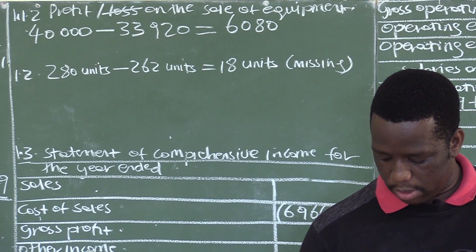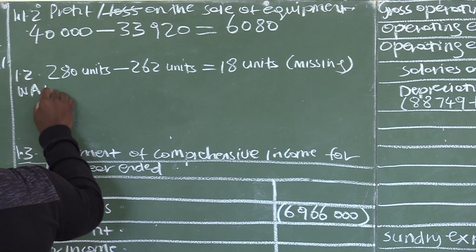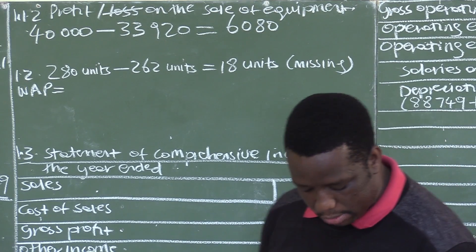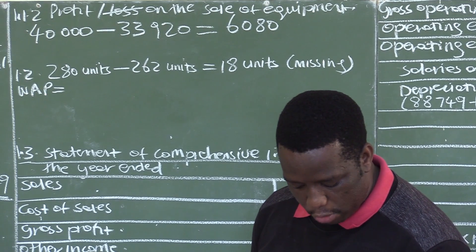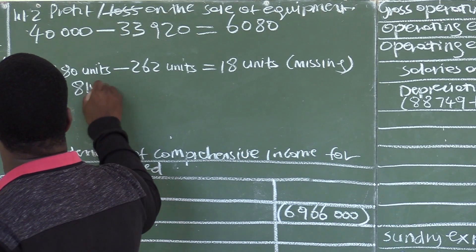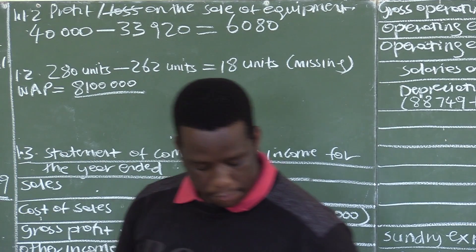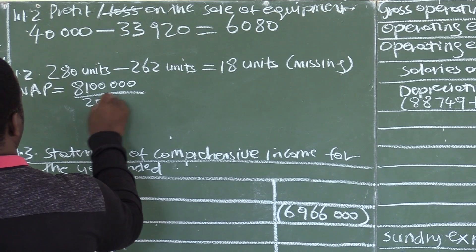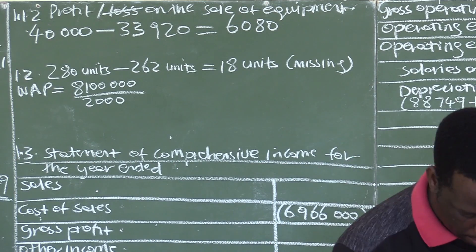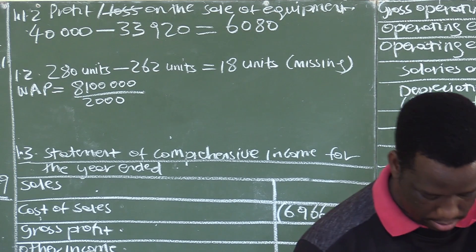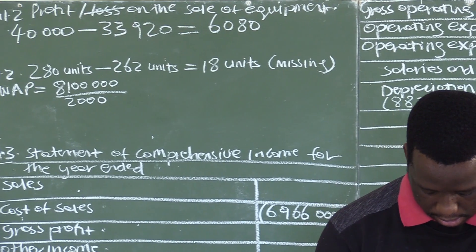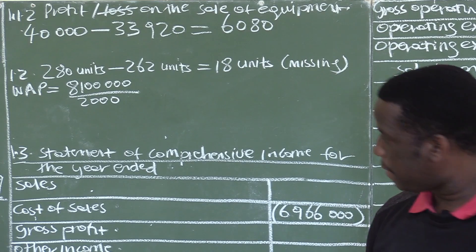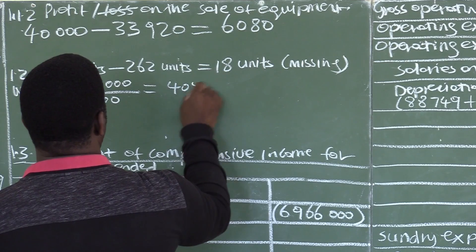We want to calculate the value of the 18 missing units. Since this business uses the weighted average method, we need to calculate the weighted average price, which is total cost divided by number of units. Our total cost from information E is 8,100,000, divided by the total number of units which is 2,000. That gives us a weighted average price of 4,050.